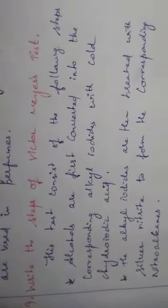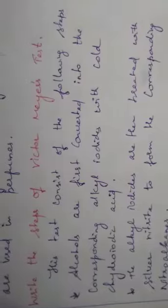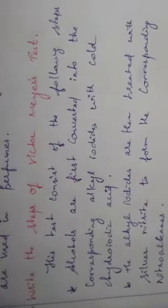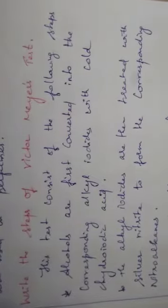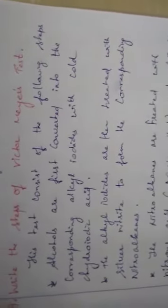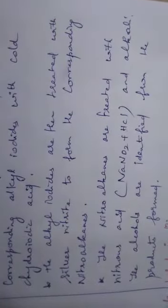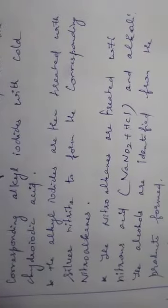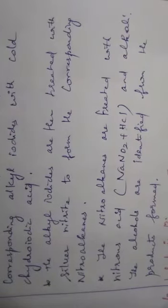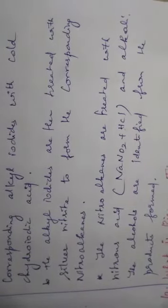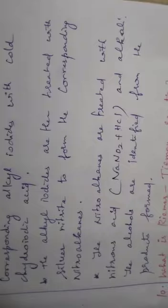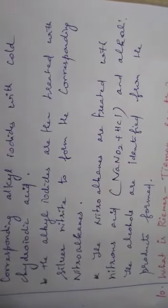Write the steps of Victor Mayer's test. The Victor Mayer test consists of the following three steps. First, alcohols are first converted into the corresponding alkyl iodides with cold hydroiodic acid. Second, the alkyl iodides are then treated with silver nitrite to form the corresponding nitroalkanes. Third, the nitroalkanes are treated with nitrous acid and alkali. The alcohols are identified from the products formed.